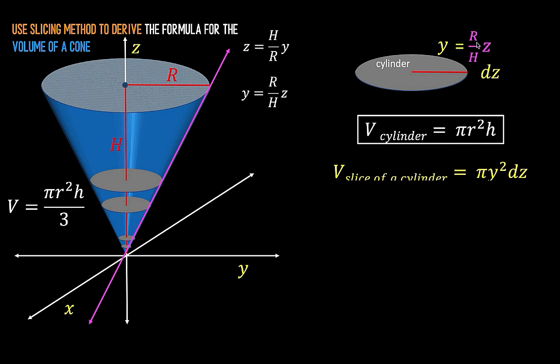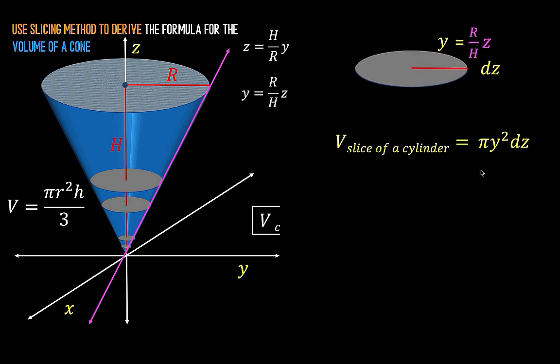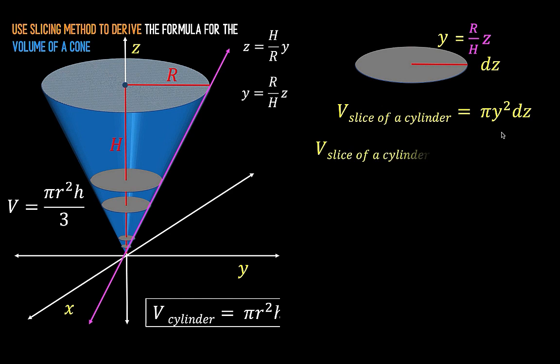So y is now r over h times z. So substituting now that value to y, we now have this equation. The volume of this circular disk now is pi times the radius squared times height, where the radius is r over h times z. Then we square it. The height of this thin disk is the infinitesimal dz. Notice now that this part here of the equation is the area of the circular base and this dz is the height of this disk.